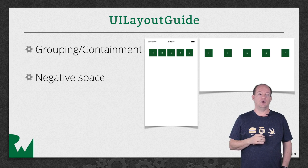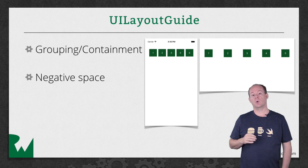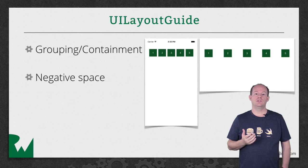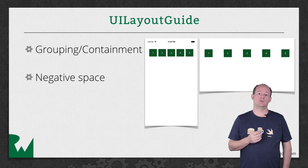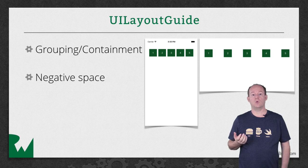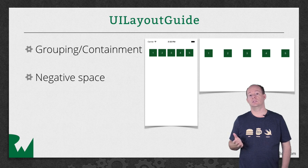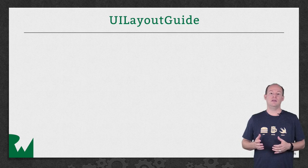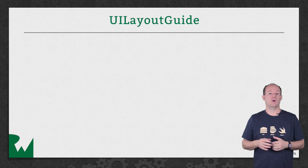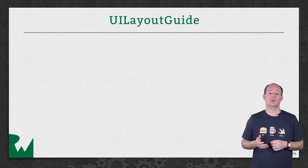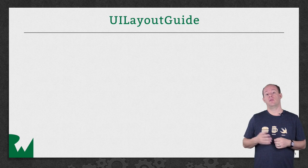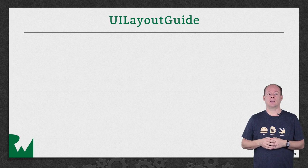This is only available in code, so if you're working in Interface Builder you may choose to still use container and dummy views, or you can create most of your layout in Interface Builder and just add the guides and their constraints in code. Even if you're not creating your own UILayoutGuides, you may want to interact with a couple of properties on UIView that are UILayoutGuides.